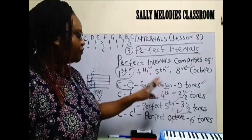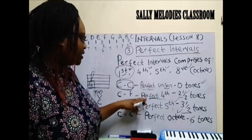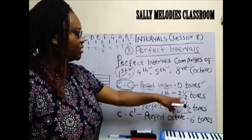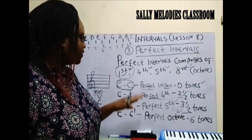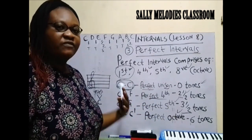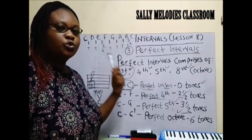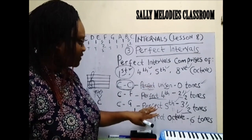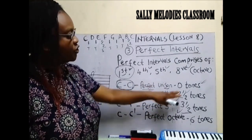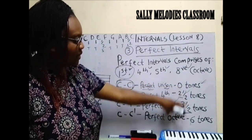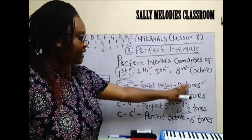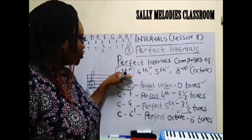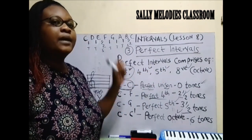It is good you get this. If you look at an interval — say it is a fourth — and it doesn't have a total of two and a half tones or five semitones, then you know it is not a perfect fourth. It is another type of fourth that has been reduced, which we will look at in the next lessons. The number of tones is what determines whether it is a perfect interval of a unison, fourth, fifth, or octave. Anything less than those tones means it is not a perfect interval.